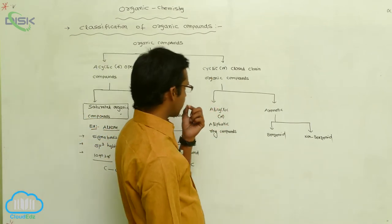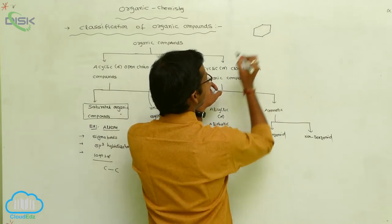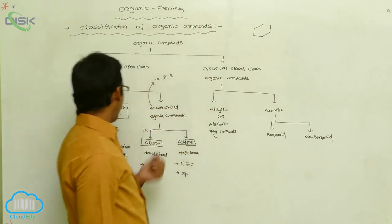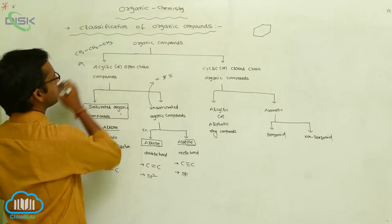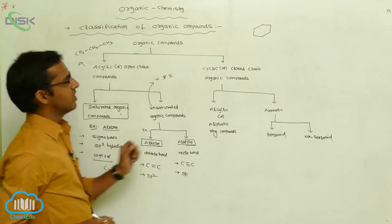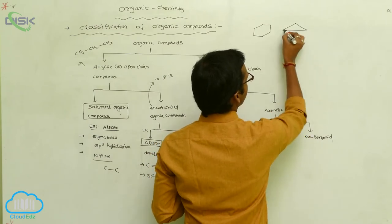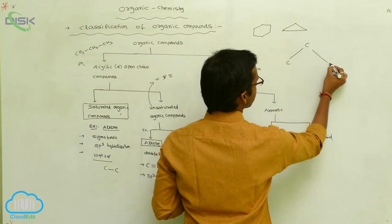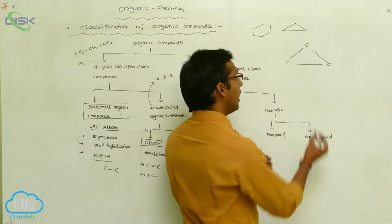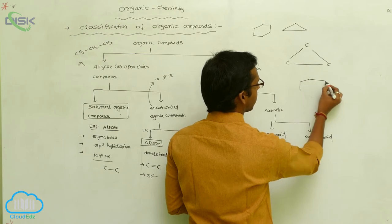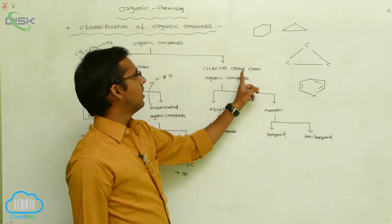In cyclic or closed chain organic compounds, all the carbons are linked in a ring. For example, an open chain structure is represented as CH3-CH2-CH3, which is a straight chain structure. A cyclic structure has all carbon atoms connected in a closed ring, forming a closed chain or ring type of structure.